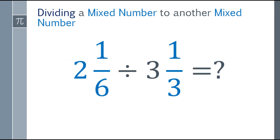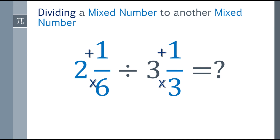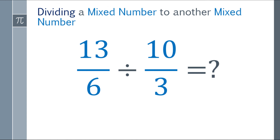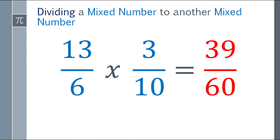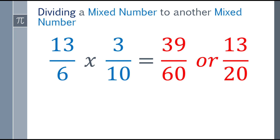For example, we have two and one-sixth, divided by three and one-third. Convert both to improper fractions. For two and one-sixth: six times two is twelve, plus one is thirteen — so thirteen over six. For three and one-third: three times three is nine, plus one is ten — so ten over three. Once both are converted, take the reciprocal of ten over three, which is three over ten, and change the division sign to multiplication. Multiply the numerators: thirteen times three is thirty-nine. Multiply the denominators: six times ten is sixty. The answer is thirty-nine over sixty. Reducing to lowest term gives thirteen over twenty.